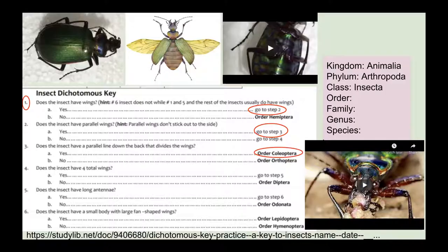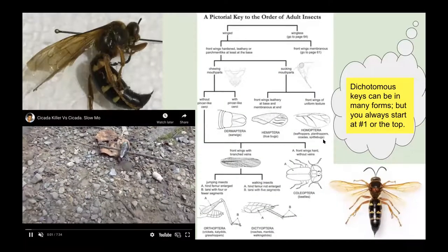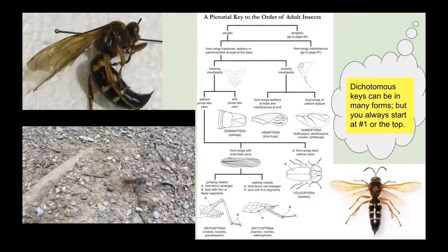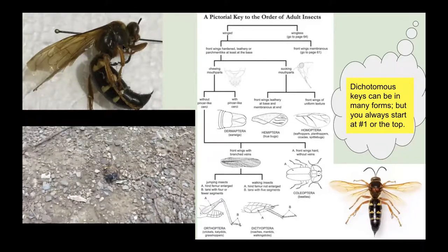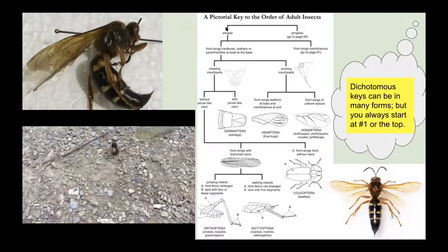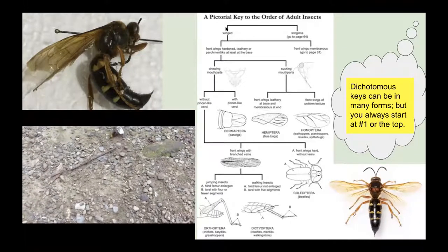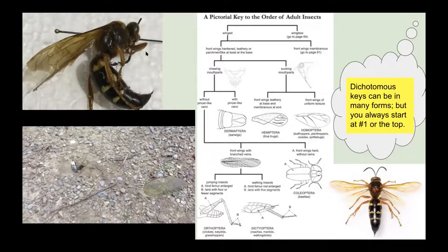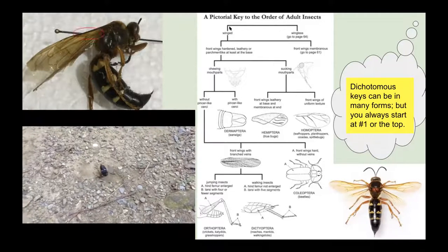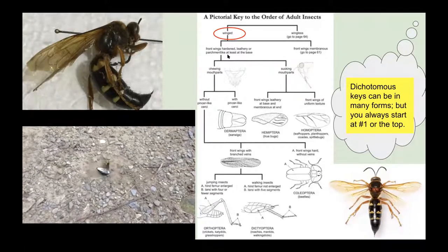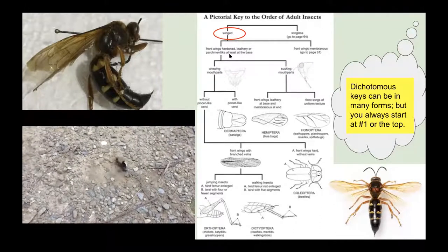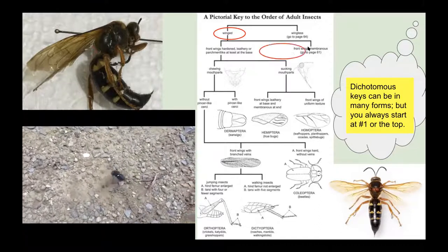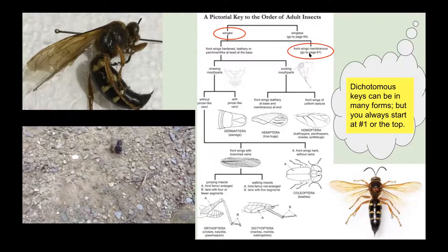Another type of dichotomous key is a pictorial version in flowchart form. Here's that same second insect — we're finding what order it belongs to. You always start at the top. Our two options are winged or wingless. This insect is winged. Following the flowchart down: are the front wings hardened or membranous? They look thin and membranous, so we follow that path. It now tells us to go to page 61. A video here shows a cicada killer wasp attacking a cicada to bring it back to the nest as food for larvae.